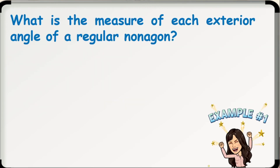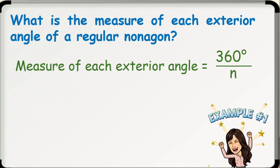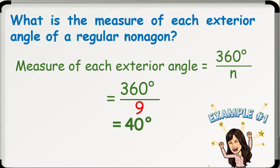Example number 1: What is the measure of each exterior angle of a regular nonagon? The measure of each exterior angle of a regular polygon with N sides is 360 degrees divided by N. Since a nonagon has 9 sides, we substitute 9 in place of N. So we have 360 degrees divided by 9. Thus, the measure of each exterior angle of a regular nonagon is 40 degrees.